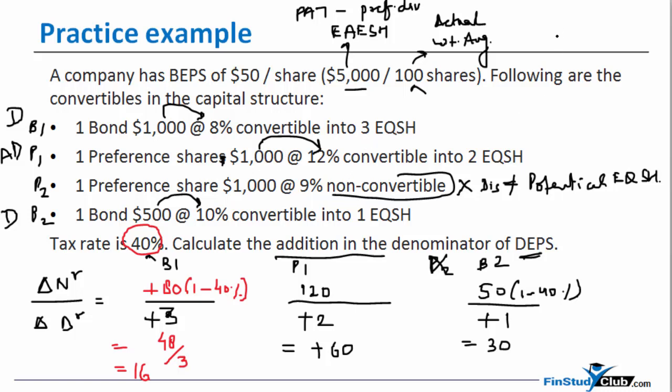That's the first learning that I have here. My second learning here is that anything which is non-convertible is not to be considered upfront. The third learning that I'm saying here is that for bonds, since the interest is tax deductible, therefore there is an element of 1 minus T that you've got to add.